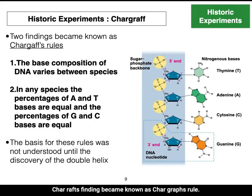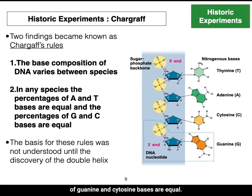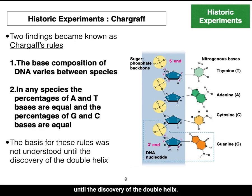Chargaff's findings became known as Chargaff's rules. The first rule states that base composition in DNA varies between species. The second rule states that in any species, the percentage of adenine and thymine bases are equal, and the percentage of guanine and cytosine bases are equal. However, the basis of these rules was not well understood until the discovery of the double helix.